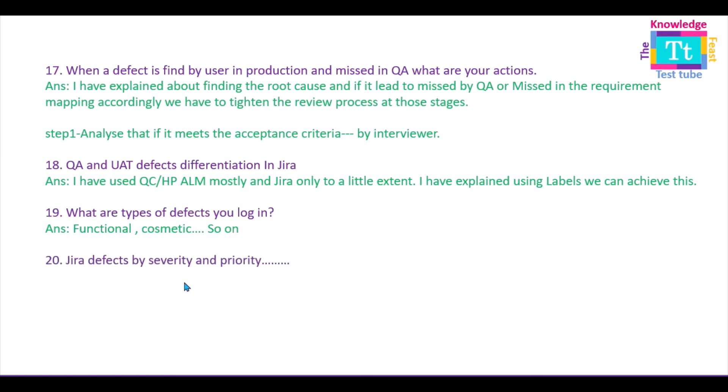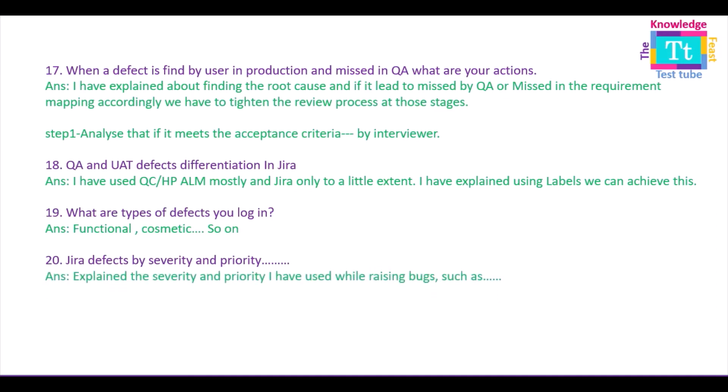The 20th and last question is about Zephyr defects by severity and priority - what severity and priority levels I assigned when raising defects in Zephyr. In Zephyr you commonly see high, medium, critical, and showstopper for severity levels. Priority uses similar common terms, but severity - high, medium, low - also carries additional explanation about business impact, like 'highly impacting the business' or 'low impact to the business.' I recollected those explanations and answered accordingly. That's all about the 20th question.